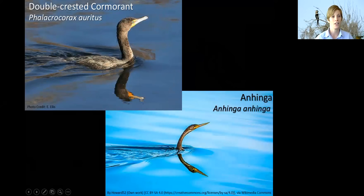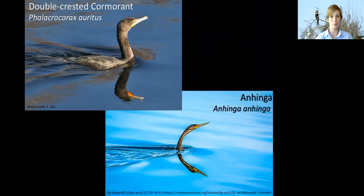Another thing to look for is if you see these two species swimming — they're both found near water, wetland, and aquatic environments. The cormorant, when swimming, has the majority of its body above water, whereas the anhinga has the majority of its body underwater and all you see is its head. When doing that, some people call it the snake bird because it looks like a snake standing up out of the water — it's a strange sight. Hopefully between those things, you'll now have those two species down pat.